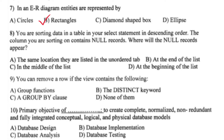You are sorting data in a table in your SELECT statement in descending order. The column you are sorting on contains null records. Where will the null records appear? Write optional D — at the beginning of the list.